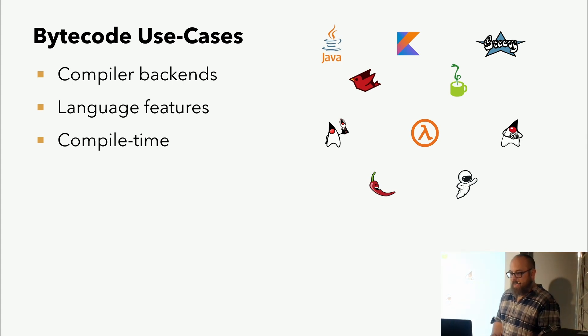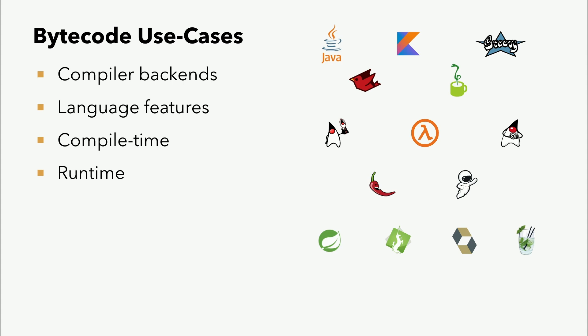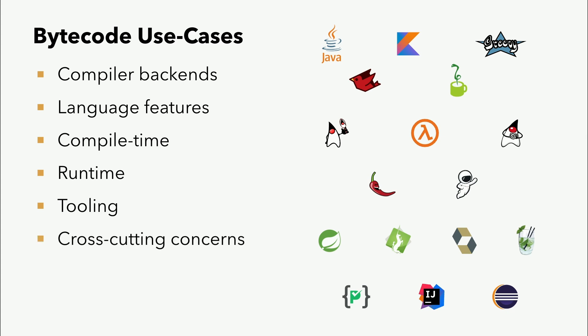Man kann Bytecode zur Compile-Zeit manipulieren, wie zum Beispiel Lombok, was hilft, sehr viel Boilerplate zu vermeiden, oder Micronaut, das Dependency-Injection zur Compile-Zeit durchführt. Es gibt aber auch Runtime-Möglichkeiten, wie zum Beispiel Spring, Tapestry, Hibernate, Mockito, die Dinge tun wie Dependency-Injection, Lazy-Loading. Serialisierung kann verbessert werden, indem Bytecode generiert wird, der Serialisierung durchführt, statt dass man jedes Mal zur Runtime Reflection einsetzen muss. Unser Tooling setzt es ein, wie statische Code-Analyse oder unsere IDEs. Und oftmals sind es Cross-Cutting-Concerns wie Transaktions-Management, Logging, Security – das kann alles auf Bytecode-Ebene passieren, ohne dass wir den Code wirklich ändern müssen. Deswegen ist es auch so eine gute Sache für Legacy-Code.